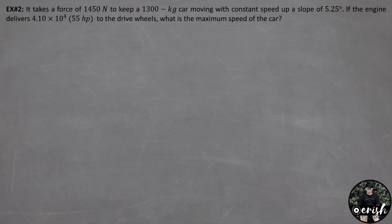Example number 2. It takes a force of 1,450 newton to keep a 1,300 kilogram car moving with a constant speed up a slope of 5.25 degrees. If the engine delivers 4.10 times 10 raised to 4 watts or 55 horsepower to the drive wheels, what is the maximum speed of the car?